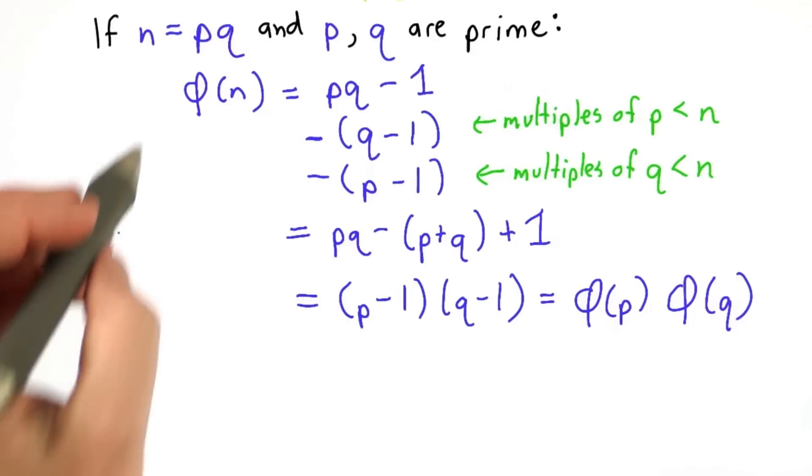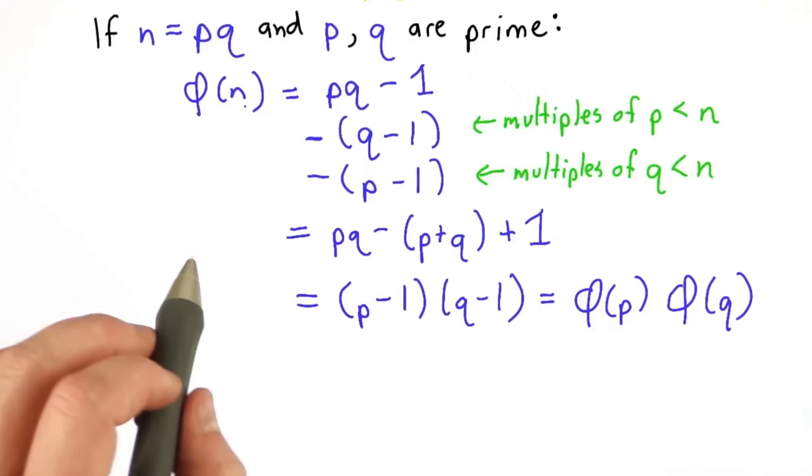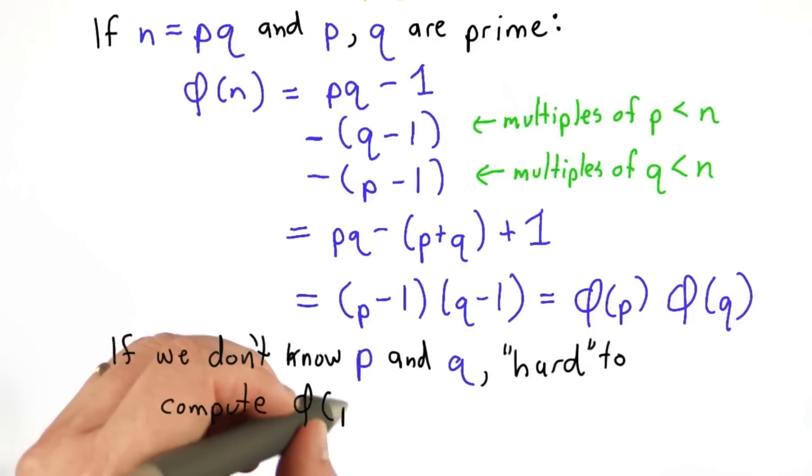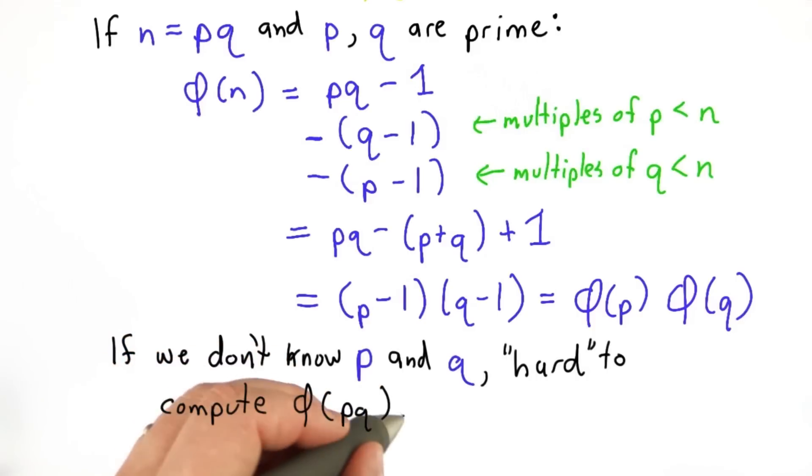The reason is, if we know the factors of n, we have an easy way to compute the value of the totient of n. But if we don't know the values of p and q, it appears to be hard to compute the totient of pq. That's the crux of what RSA security relies on.